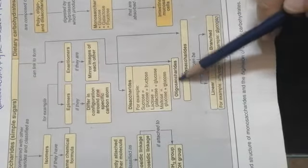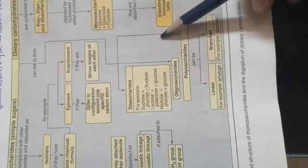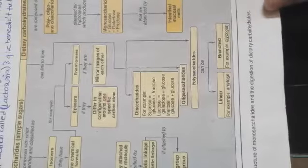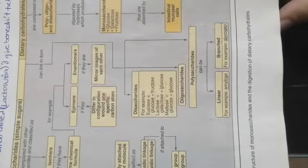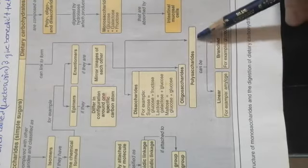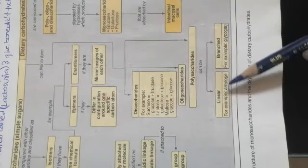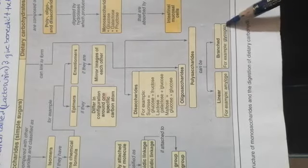The oligosaccharides are another classification in which there will be three to ten monosaccharide units attached. Examples include raffinose and trehalose. Then there are the polysaccharides, which are divided into the linear polysaccharide amylose and the branched polysaccharide glycogen.